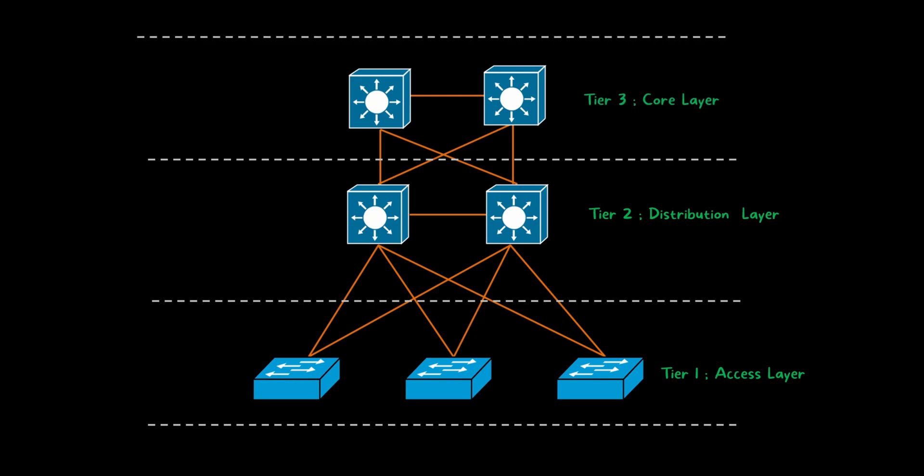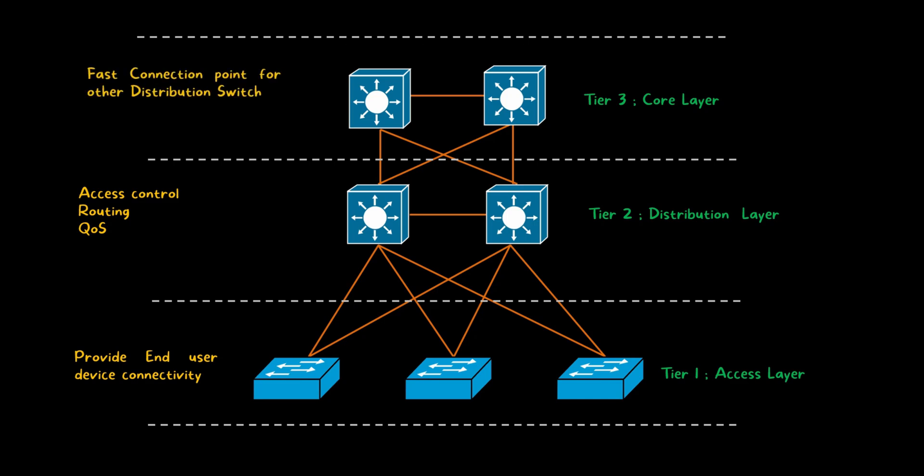Then we have the third layer, called tier three or the core layer. The main function of the core layer is to provide fast network connectivity between multiple local area networks — it is mainly used for the uplink to other networks. So in three-tier network architecture we have three layers, each with its own function: the access layer provides end user device connectivity, the distribution layer manages access control, routing, and quality of service, and the core layer provides the fast connection point for the other distribution switches.